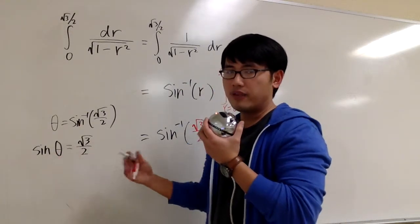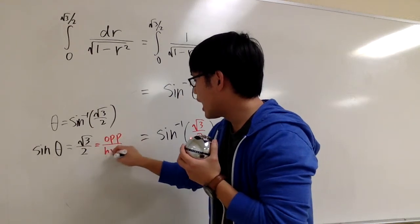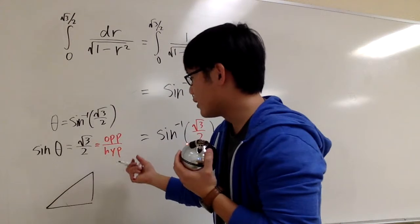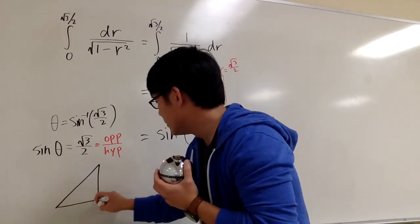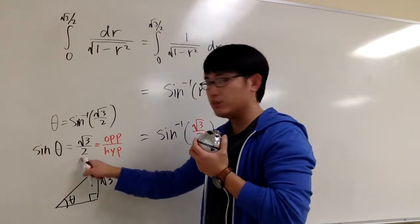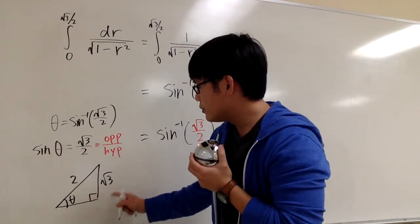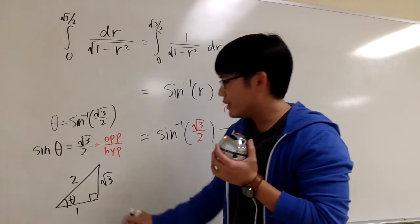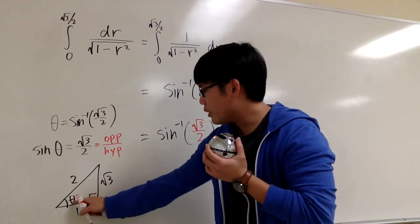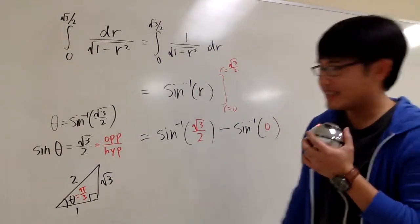Sine in the right triangle means opposite over hypotenuse. So we draw a right triangle with angle theta. The opposite side is square root of 3 and the hypotenuse is 2. The remaining side is 1. Recognize this — it's a special right triangle: the 30-60-90 triangle. The angle opposite the square root of 3 side is 60 degrees, which is pi over 3.